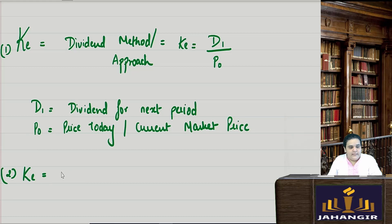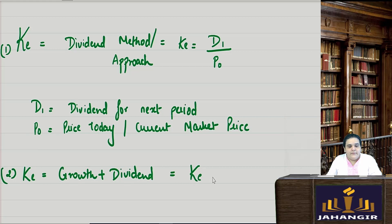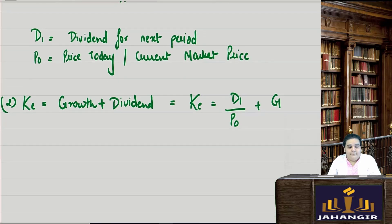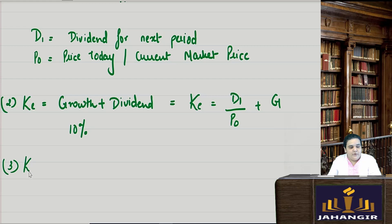Cost of equity can also be found using the growth plus dividend approach. In that case: ke = D1 / P0 + g, where g is the growth percentage. If the company is growing at 8% or 10%, that growth percentage is added to the formula.